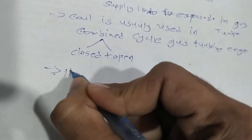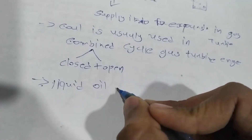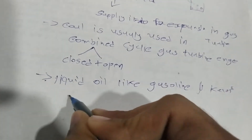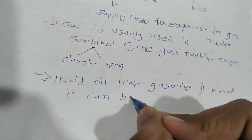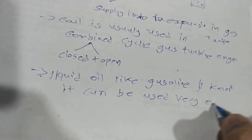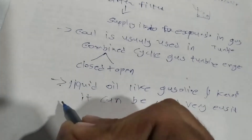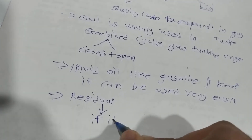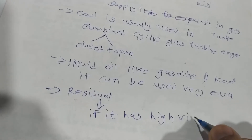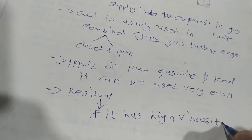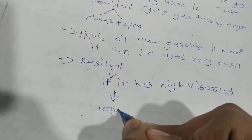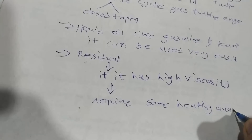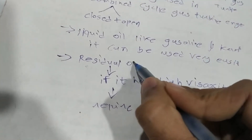Now I will tell you about liquid fuels. We know about liquid oils like gasoline and kerosene — these can be used very easily in gas turbine engines. If we talk about residual fuel, we can use it if it has high viscosity, but we require some heating arrangement if you want to use residual oil as fuel.